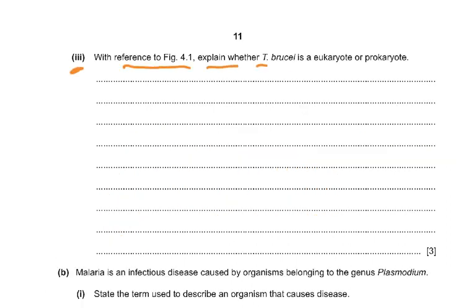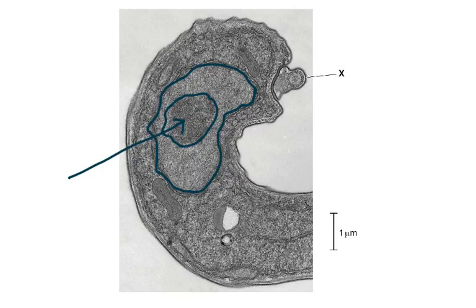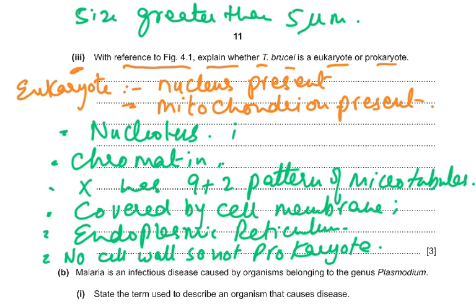Part 3 asks you to explain, with reference to figure 4.1, whether T. brucei is a eukaryote or a prokaryote. It has a proper nucleus with a nuclear envelope and nuclear membranes, a mitochondrion, a nucleolus, chromatin, and structure X shows a 9+2 pattern of microtubules. X is covered by a cell membrane, and endoplasmic reticulum is present. It is not a prokaryote because there is no cell wall, and the size is much greater than 5 micrometers.